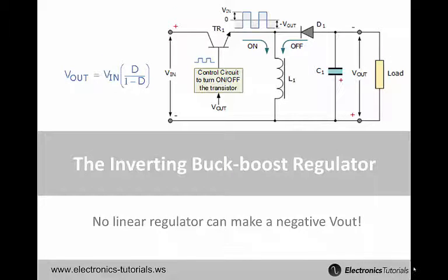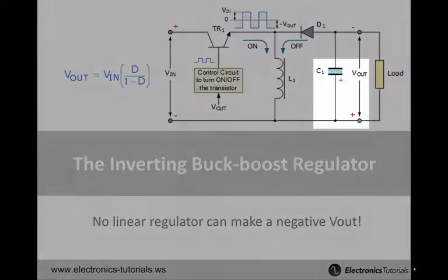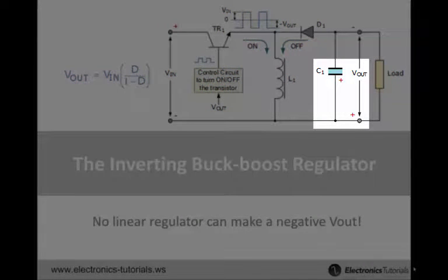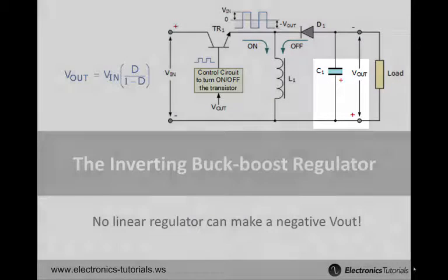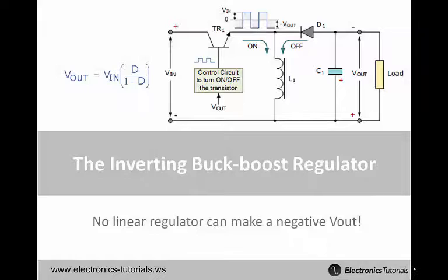The final topology of the three basics is the buck boost. As the name implies, it can generate an output voltage whose absolute value is either higher or lower than that of the input voltage, but, and this is a big but, the polarity of that output voltage is reversed with respect to the input. The number of modern circuits that need negative voltages is shrinking, but sensitive amplifiers, sensors, and other equipment still use positive and negative voltages to operate. Like the boost, the buck boost uses the amazing ability of the inductor to make that negative voltage. In this case, the voltage across the inductor reverses polarity in order to maintain current flow when TR1 turns off. If you inspect the transfer function on the left, in theory the output voltage can go to negative infinity. In practice, it can get to about minus 10 times the input voltage.